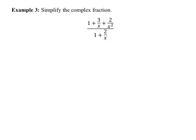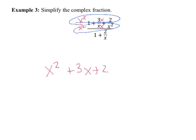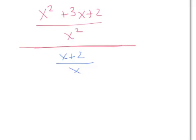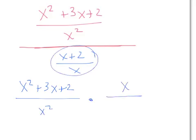Example 3 — simplify the complex fraction. This example has a monomial variable in the denominators. For Method 1, the common denominator up top is clearly x squared. Multiplying the appropriate terms by x squared over x squared and x over x gives a numerator of x squared plus 3x plus 2, all over x squared. The denominator of the overall fraction becomes x plus 2 over x, after multiplying by x over x. Now that we have a fraction for both the top and bottom, we multiply by the reciprocal, giving x squared plus 3x plus 2 over x squared times x over x plus 2.